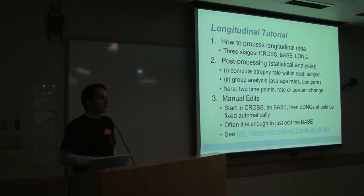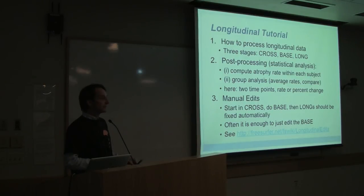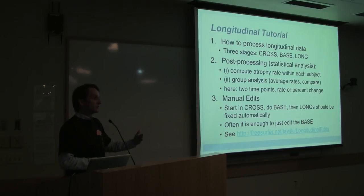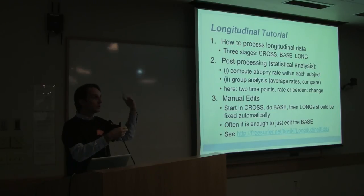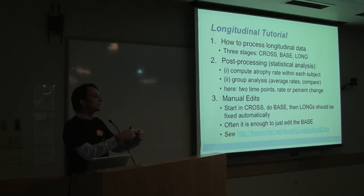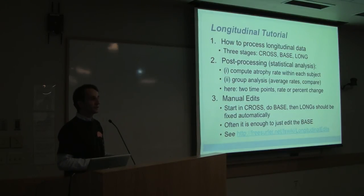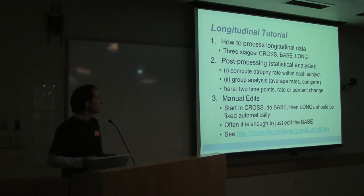If you have variable time points — some subjects with one, some with ten, and varying spacing — you would not run this simpler analysis. Instead, we will compute the atrophy rate within each subject as the first step, reducing all time points to a single number: the rate of change at each location in the cortex or ROI. The second step is then to run a group analysis on this single measurement, comparing atrophy rates across groups rather than thickness across groups.